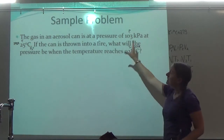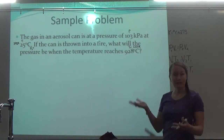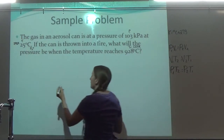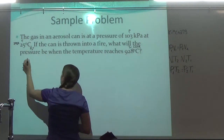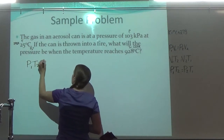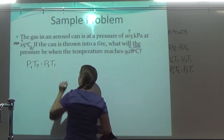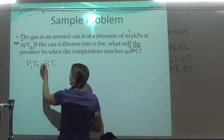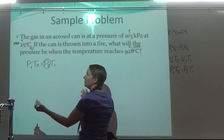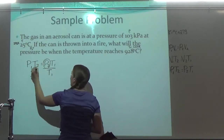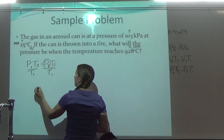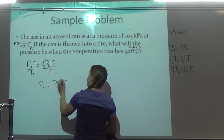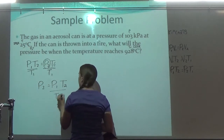I see that this time I have P's and T's, so I know I'm using Gay-Lussac's Law, but I'm going to have to rearrange it. So P1 T2 equals P2 T1, and I am solving for P2. To get it by itself, I just need to move T1 to the other side by dividing both sides by T1. So then P2 equals P1 times T2 over T1.